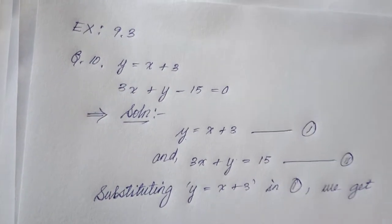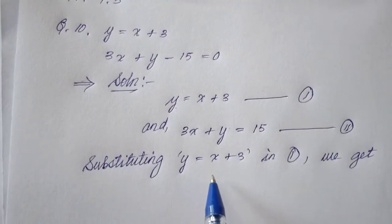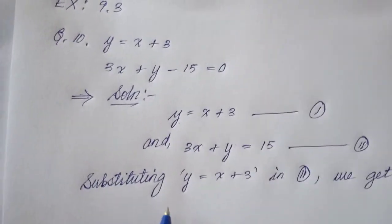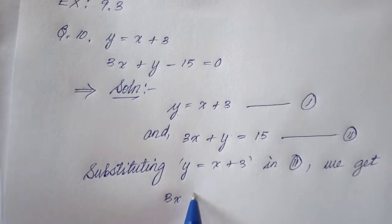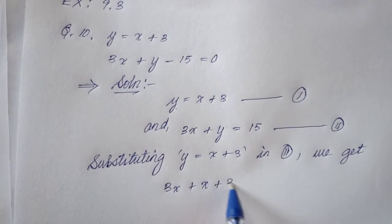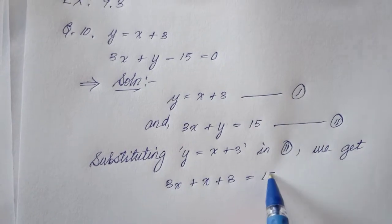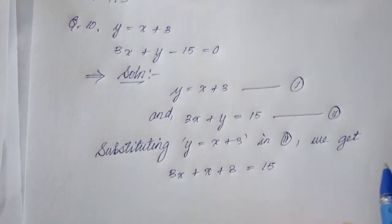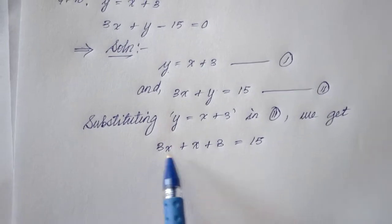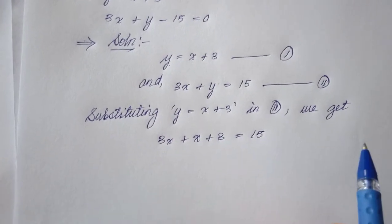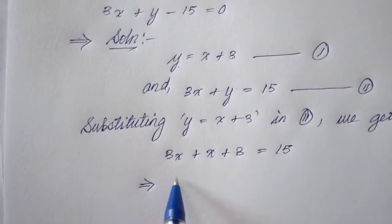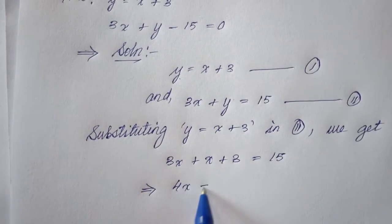Substituting y is equal to x plus 3 in equation 2, we get: 3x plus, instead of this y, I can put x plus 3 equal to 15. So I don't need to put this as a new equation because I will have to do the calculation here. We don't have any y here anymore. So, 3x plus x is 4x, then 15.